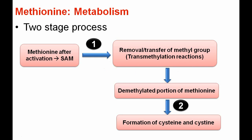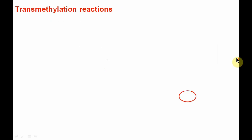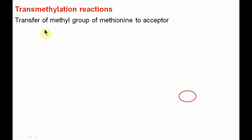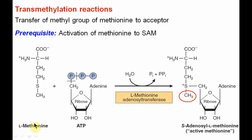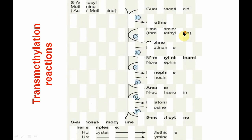In the transmethylation reaction — stage one — the methyl group is removed from methionine. The prerequisite is activation of methionine to produce S-adenosyl methionine. Methionine, with the help of adenosyl triphosphate (ATP) and the enzyme methionine adenosyl transferase, forms S-adenosyl methionine, also called active methionine. After activation, it carries out transmethylation reactions.